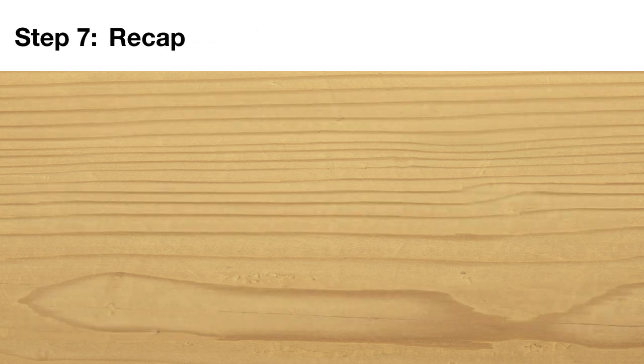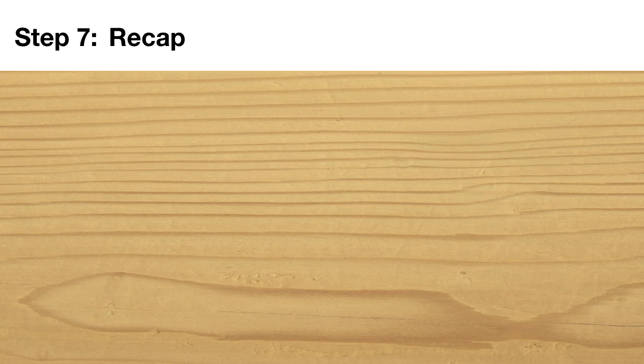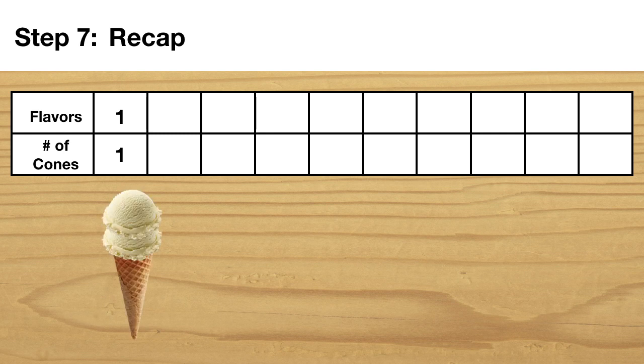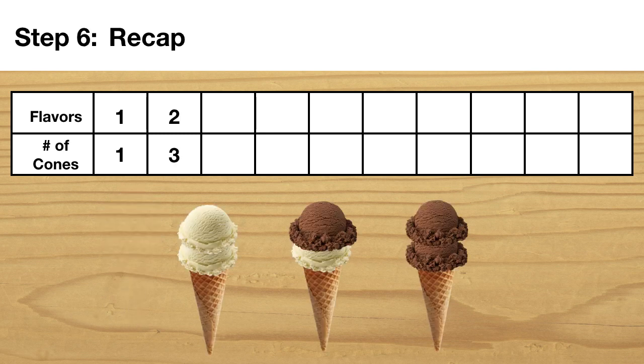Step seven. Let's recap this problem. Now I'm not sure how you solved this problem, but I'm going to show you one way that you could have approached it. I made a table where I could keep track of the number of flavors and the number of cones that were possible. I remembered that when there was only one flavor, there would be only one possible cone. I also remembered that if there were two flavors, there would be three possible cones.